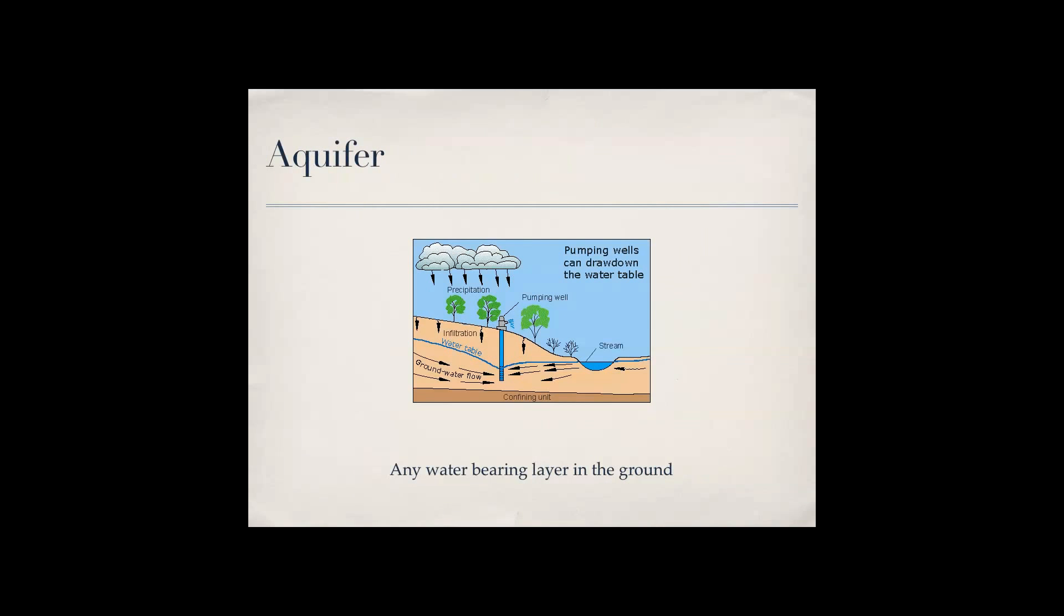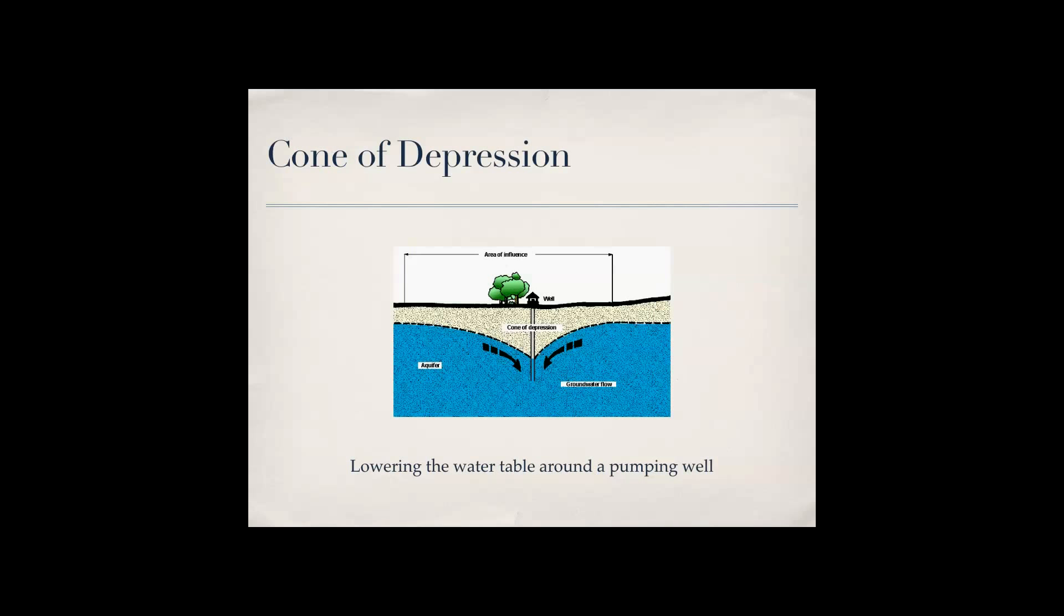An aquifer is any water bearing layer in the ground. And the cone of depression is when you lower the water table around a pumping well.